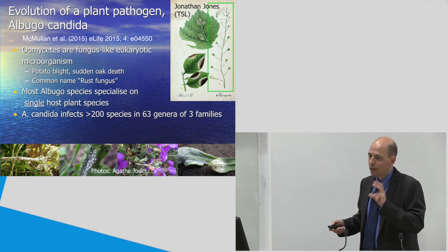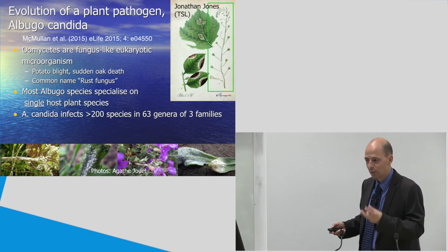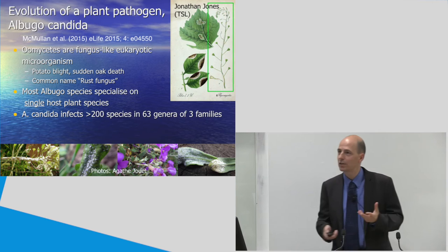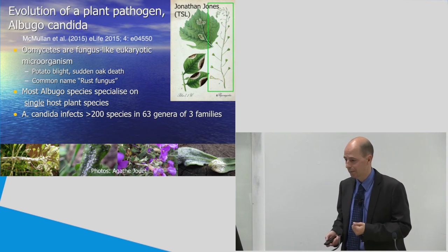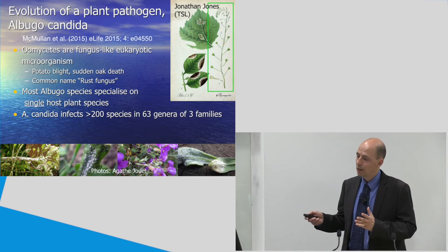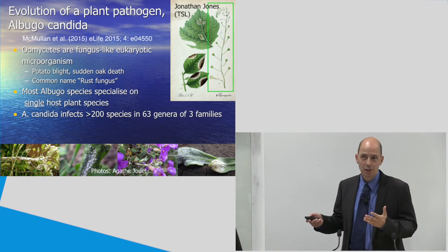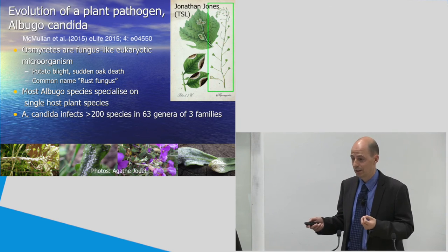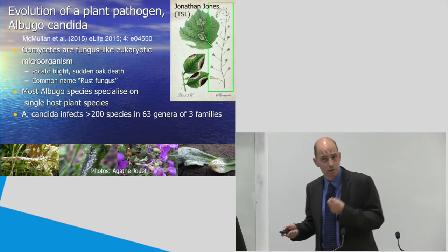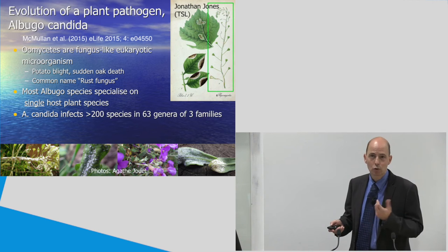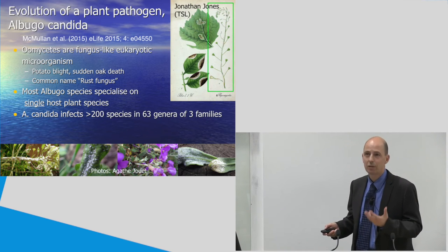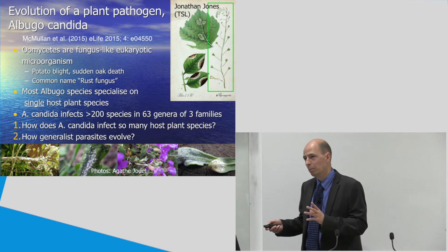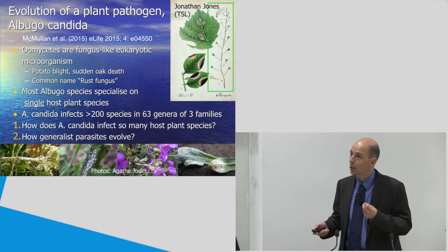Now, this was the subject we studied together with Jonathan Jones, studying an Oomycete, Albugo candida. This is a study which is published recently in eLife by McMullan et al. So, what we did, we looked at this particular fungus, fungus-like Oomycete, which probably you better know as a rust fungus, and which can cause several diseases like potato blight, sudden oak death, but it can also infect broccoli in your back garden. Now, there's a particular genus of Oomycete called Albugo, and this genus consists mainly of specialists. So, with that I mean that they specialize on a single or very few different host plant species. However, this particular species, which is the subject of our investigation, Albugo candida, infects over 200 different host plant species from 63 genera from three different plant families. So, it has a huge range of different host plants. Now, this is remarkable, because how does a generalist evolve really? So, that was the question we wanted to answer here.